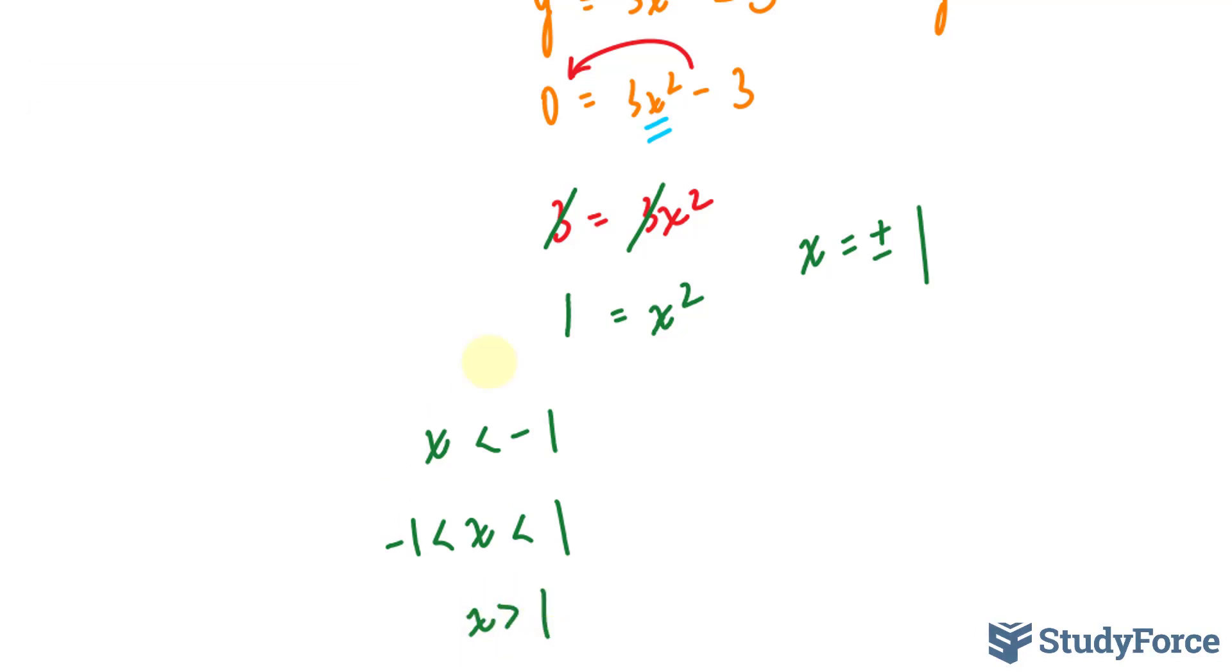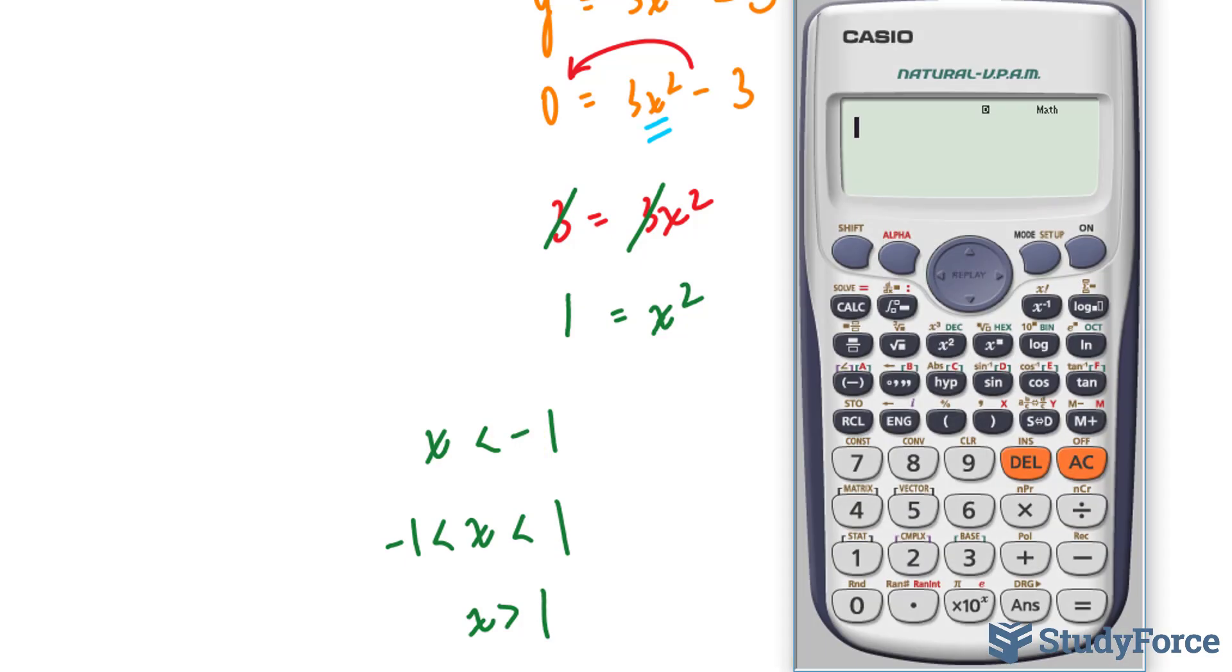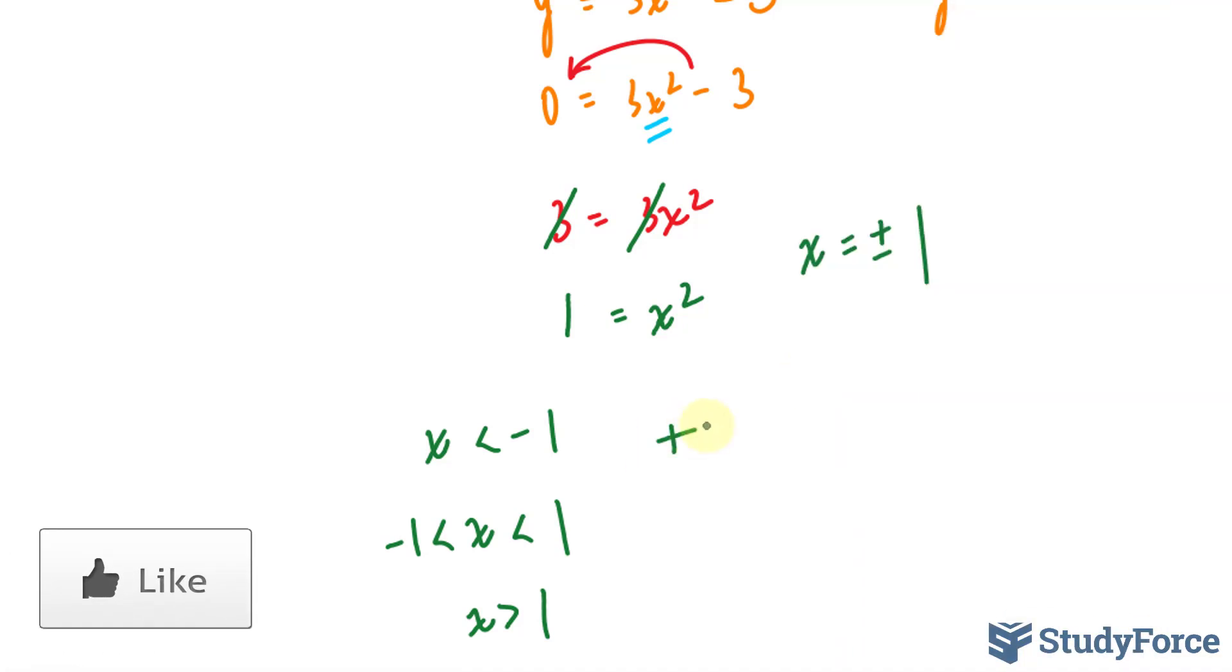So we can pick any random point that is less than negative 1, so let's use our calculator to do that. 3 times any random number that is less than negative 1, let's say negative 2, to the power of 2 minus 3. That gives us a positive output, so I'll write down plus.